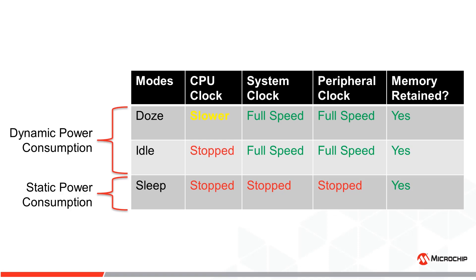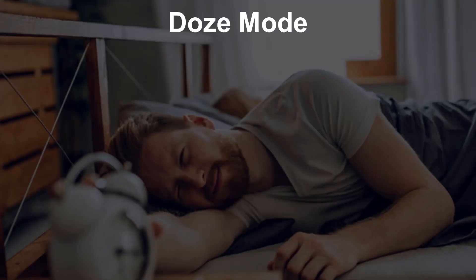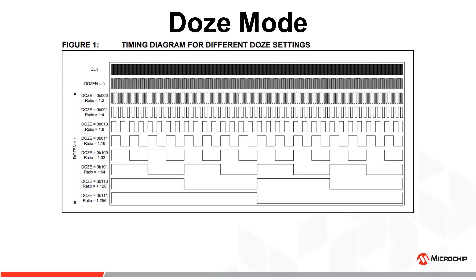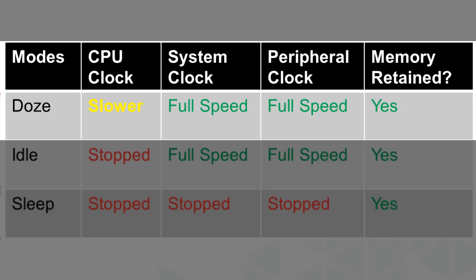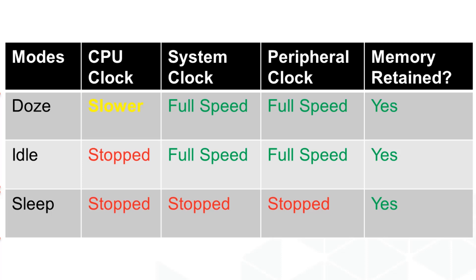If you're anything like me, you probably hit the snooze on your alarm clock three to four times before waking up — this is basically how Doze mode works. The CPU will wake up every so often and execute an instruction, and as the developer you get to decide how long the CPU will doze for, in the form of a ratio, for example 1:4, 1:8, 1:16, etc. In this mode, the system and peripheral clocks still run at full speed, so all peripherals can still be utilized.